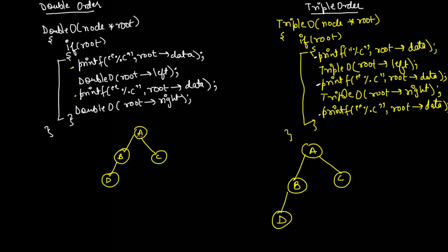There is something very useful about trees — you can write the recursive calls within the nodes to track which node has already executed which statement. Let me number the lines. For double order: line 1, line 2, line 3, line 4. For triple order: line 1, line 2, line 3, line 4, and line 5.